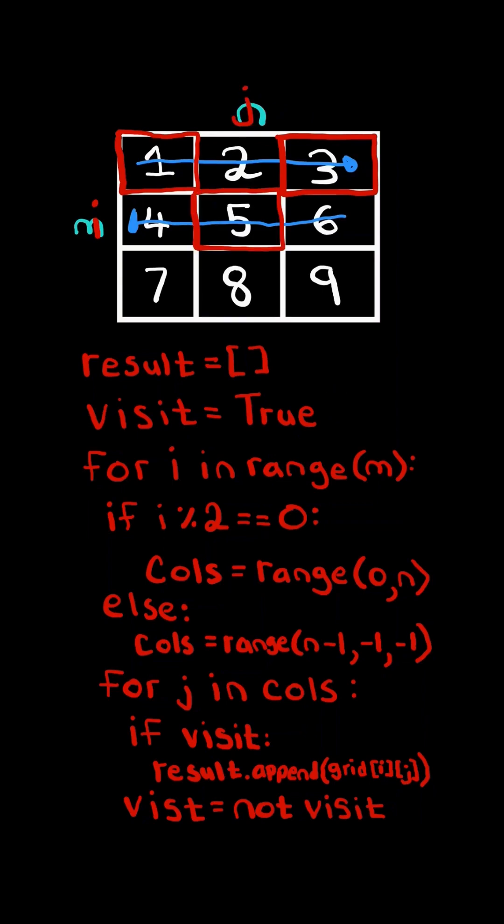Since it's true, we add the number to the list. We then change it to false and iterate backwards again. We flip it back to true, and we are done iterating through the columns, so we advance i to the next row.